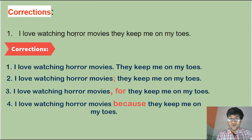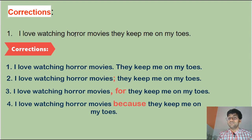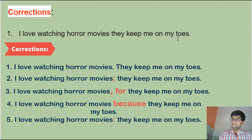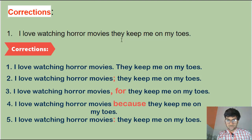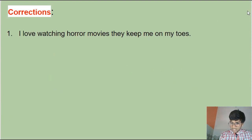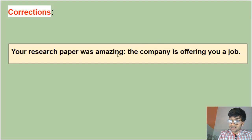Method four: use a colon. You use a colon when the second part justifies, summarizes, or concludes the first part, or when the focus is on the second part. Here — 'I love watching horror movies: they keep me on my toes' — the second part does justify the first. But if the sentences are not closely related and the second part doesn't explain or justify the first, do not use a colon. A great example of a colon is: 'Your research paper was amazing: the company is offering you a job.'